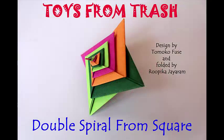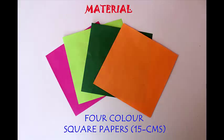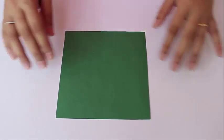We are going to start today by folding a modular design, a double spiral by the Japanese expert Tomoko Fusei. It's folded with four squares of paper. Start by taking six inches of paper.